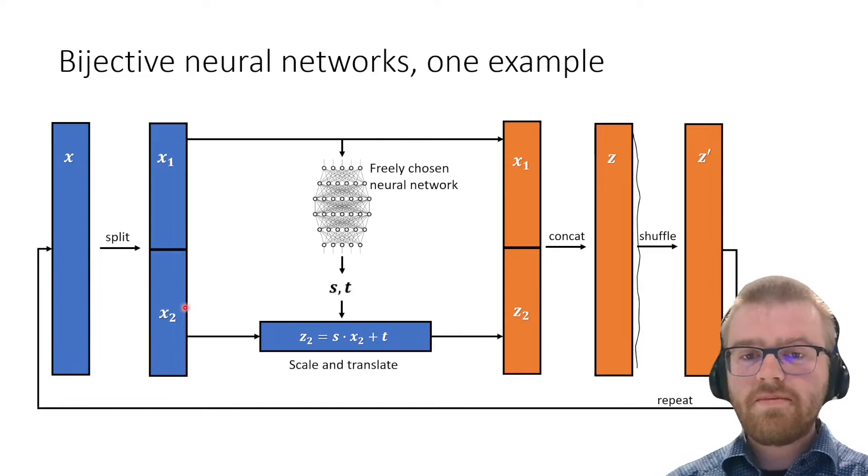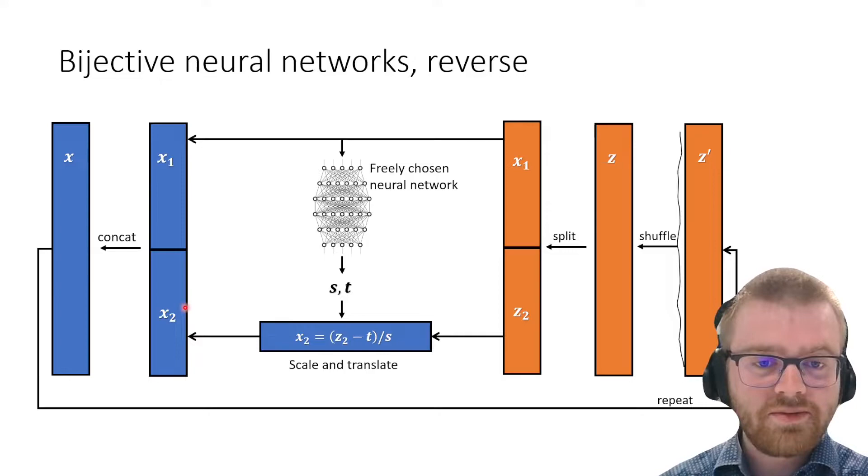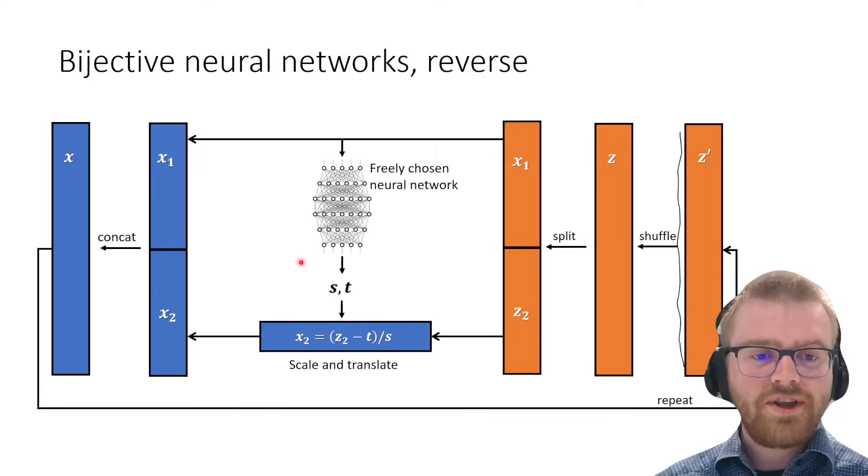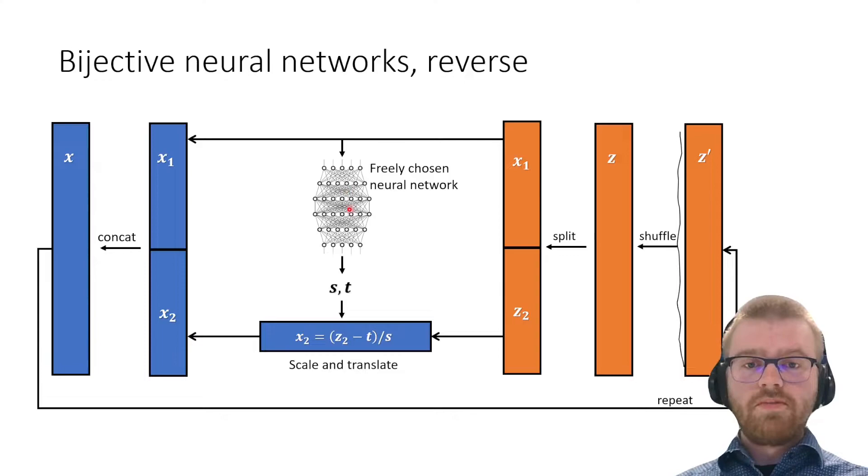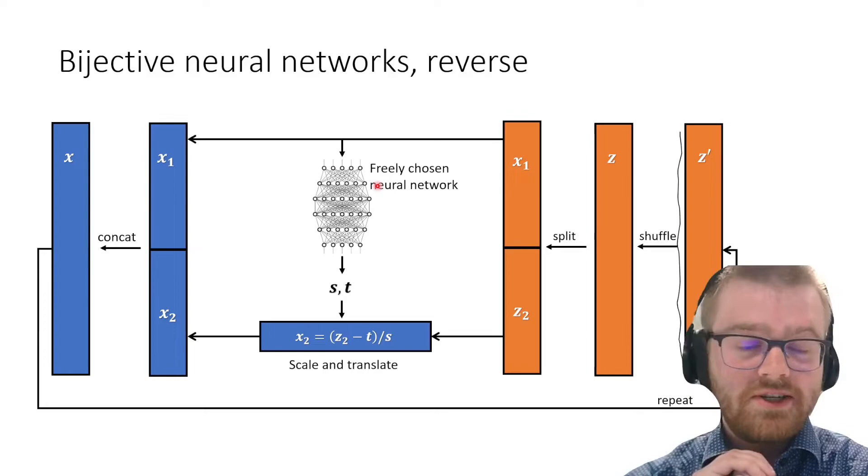The nice thing about this affine coupling network is that it is exactly invertible. If we invert this, we only need to change the directionality of all the arrows, but one set of arrows stays the exact same—we still go from top to bottom. We never actually need to invert this neural network, which is great because we don't want to calculate its inverse because it might not even exist.